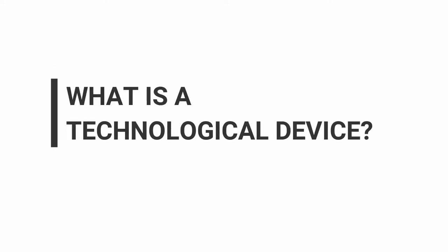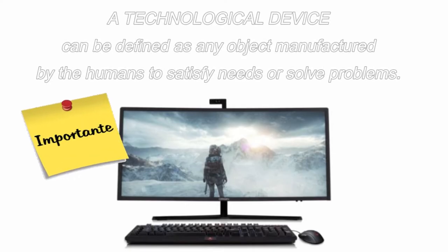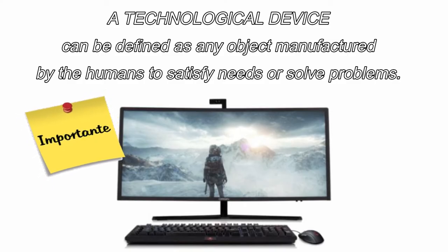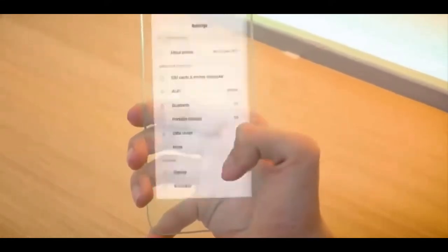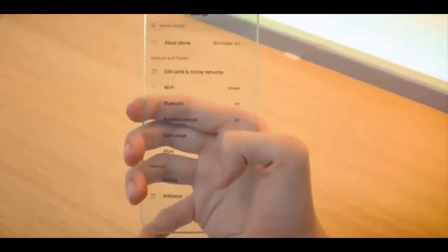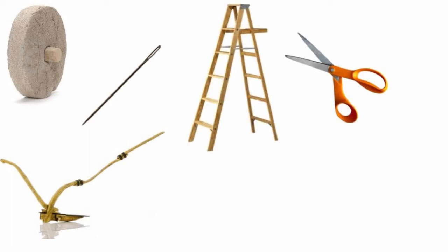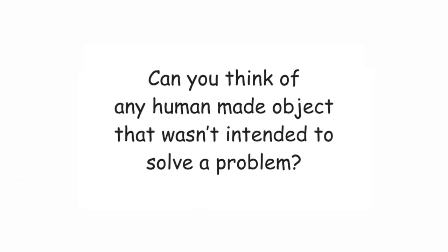What is a technological device? A technological device can be defined as any object manufactured by humans to satisfy needs or solve problems. When we talk about technological devices, the first things that come to mind might be computers and smartphones, but anything man-made is a technological object. A wheel, a plow, a simple sewing needle, a ladder, scissors, a fishing rod — in fact, I can't think of anything built by humans that is not a technological device.